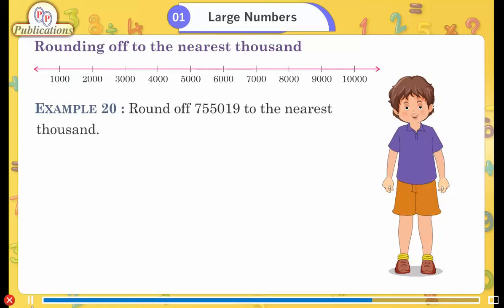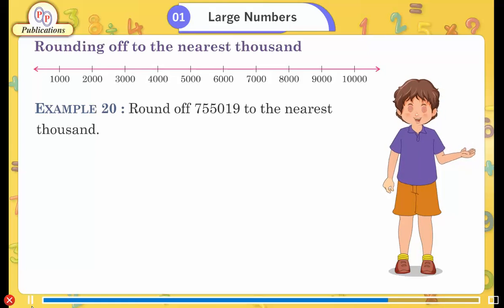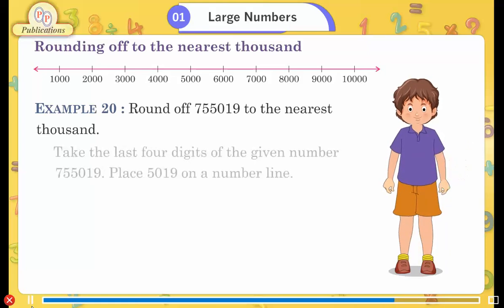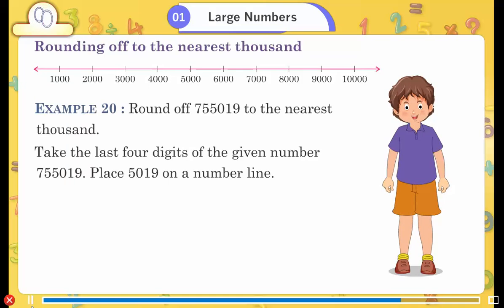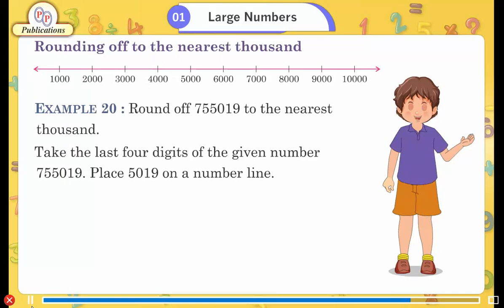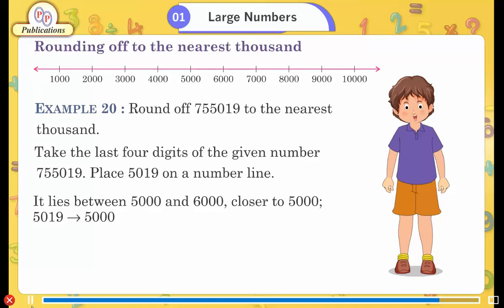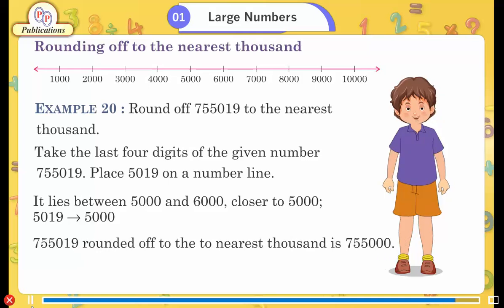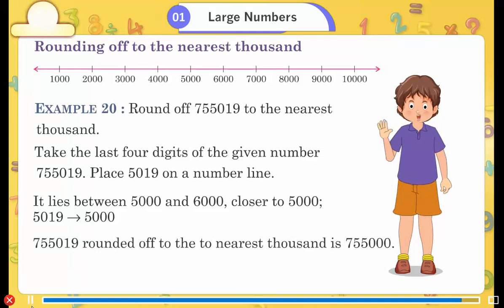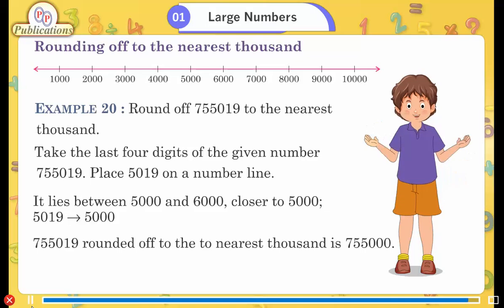Rounding off to the nearest thousand. Example 20: Round off seven lakh fifty-five thousand nineteen to the nearest thousand. Take the last four digits: 5019. Place 5019 on a number line — it lies between 5000 and 6000, closer to 5000. Five thousand nineteen is closer to five thousand. Therefore, seven lakh fifty-five thousand nineteen rounded off to the nearest thousand is seven lakh fifty-five thousand.